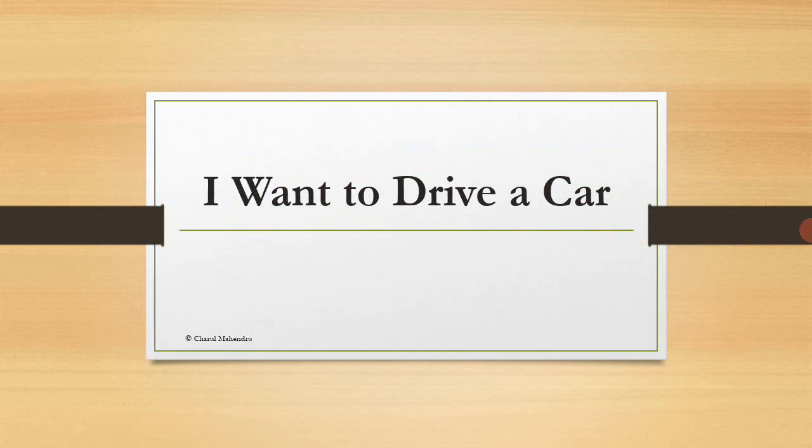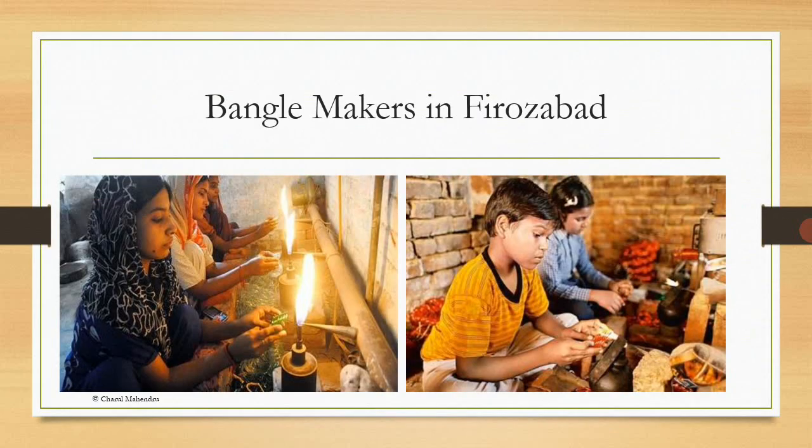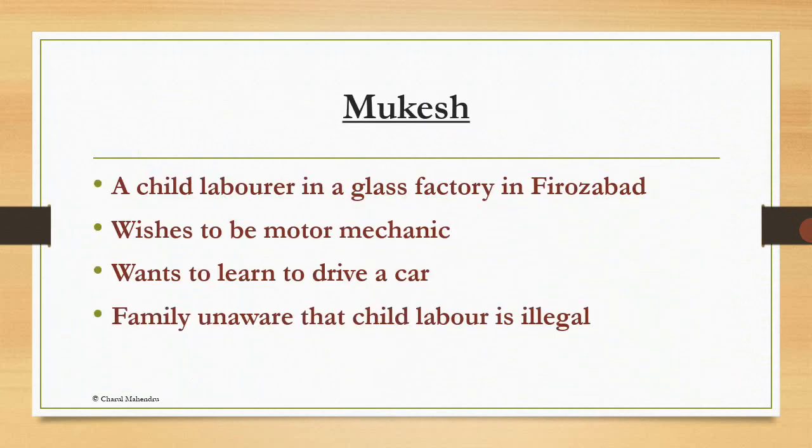Now we come to the second part, Part B, which talks about Mukesh living in Ferozabad, employed in the family business of making bangles but dreaming of driving a car. The title of this part is: I want to drive a car. This is about the bangle makers in Ferozabad — beautiful bangles are associated with these factories. Mukesh is a child labourer in a glass factory in Ferozabad. He wishes to be a motor mechanic and wants to learn to drive a car. His family is unaware that child labour is illegal.